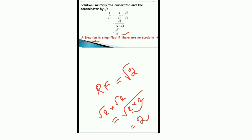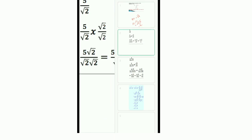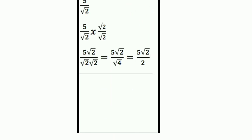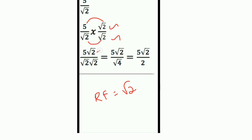If you have a two-term denominator, you take the opposite sign — but for a single number, no problem: consider the same number as the RF. The next problem is 5/√2. The denominator is √2 — a single number — so RF = √2. Multiply numerator and denominator by √2. The numerator becomes 5√2 and the denominator becomes √2 × √2 = √4 = 2. So the answer is 5√2/2.